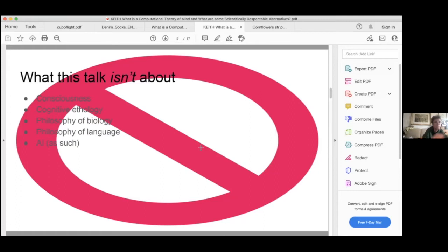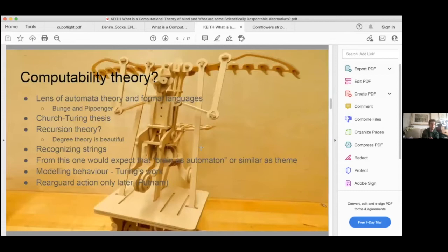So what's computability theory? You can approach this in many different ways. My favorite way is through the lens of automata theory and the theory of formal languages. This is how I first encountered it, in fact, and it's a formal discipline. Bunge talks about it in passing in his work on metaphysics, which is interesting to me because that's how I think about it now.